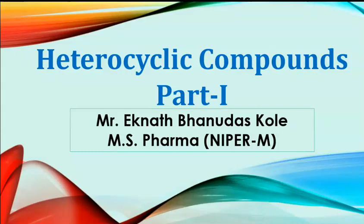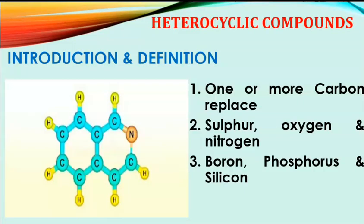Today we are going to learn heterocyclic compounds. The heterocyclic compounds are the compounds in which one or more carbon atoms are replaced with a heteroatom. Examples of heteroatoms include sulfur, oxygen, and nitrogen — the most common ones. We can also have boron, phosphorus, and silicon in heterocyclic compounds. See the structure: this is a fused ring structure containing one heteroatom and one fused ring.